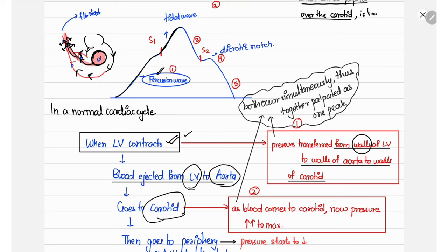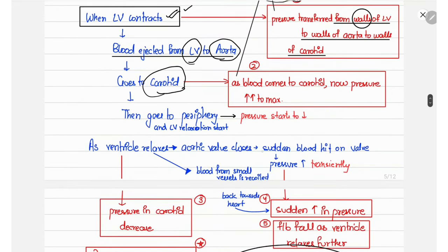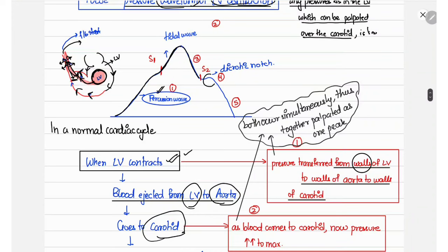As blood transfers from the carotid to the peripheries and the left ventricle starts relaxing, the pressure within the carotid decreases. As relaxation starts and blood begins returning to the heart, there is sudden closure of the aortic valve, causing blood to hit the aortic valve forcefully. This transiently increases pressure, producing the next wave — the dicrotic notch.